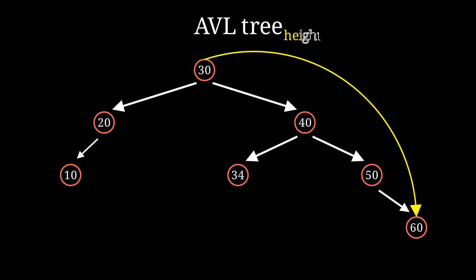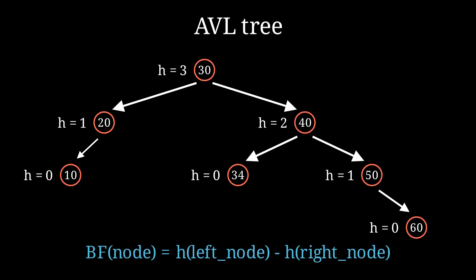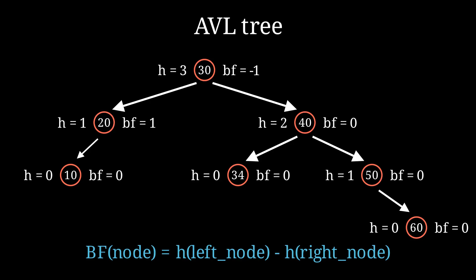For example, the height of the root is three, because the length of the path from the root to the right-most leaf is three. Here are all the nodes labeled with their heights. The balance factor of a node is the height of the left node minus the height of the right node.